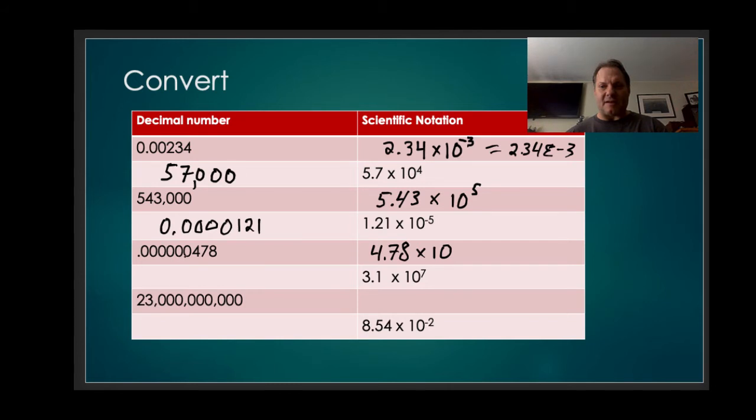And because I'm dealing with a number less than 1, I'm going to make that a negative. Again, 4.78 times 10 to the negative seventh, you know you're dealing with something much less than 1. All right, next one. 3.1 times 10 to the seventh. I know that's a big number. If someone said, hey, would you like 3.1 times 10 to the seventh dollars? I'd be pretty happy.